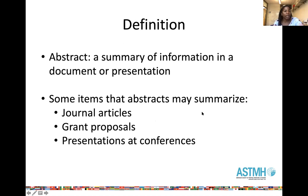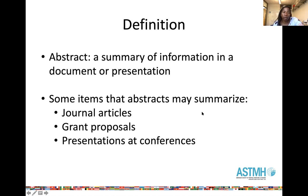So what is an abstract? An abstract is a summary of information in a document or presentation. An abstract is really a summary of all the information that you're presenting to different audiences. It gives you a snapshot or synthesis of the data and the research that you want to share and communicate with others. We find abstracts in many contexts in scientific communications, for instance in manuscripts or journal articles, where the abstract summarizes the key findings from your study.